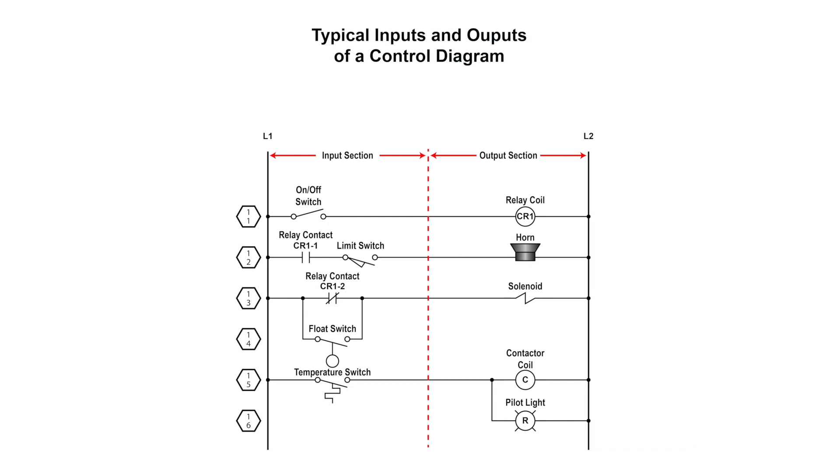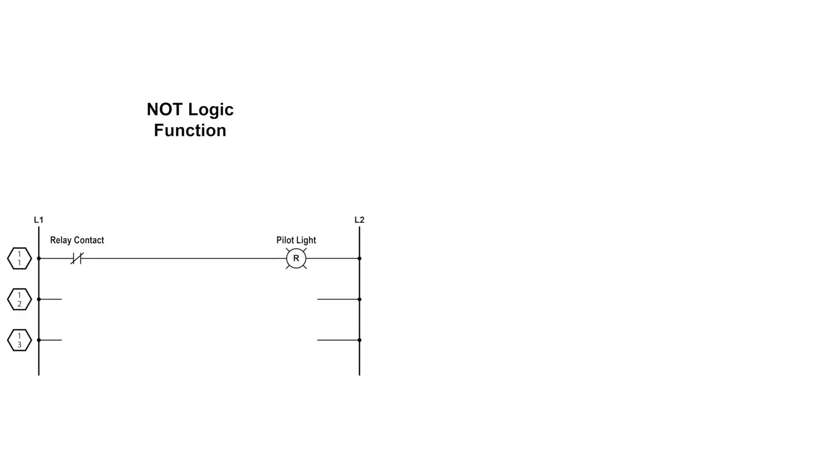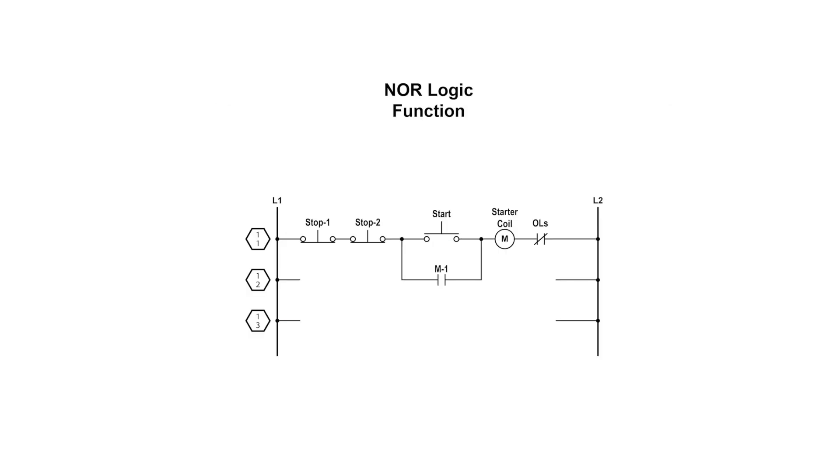Logic is the ability to make decisions when one or more different factors must be taken into consideration. Control logic functions describe how inputs interact with each other to control outputs. The logic functions include AND, OR, NOT, NAND, and NOR functions.